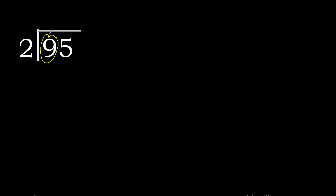95 divided by 2. 9 is not less than 2, therefore we proceed. 2 multiplied by 5 is 10 — excessive. 2 multiplied by 4 is 8; 8 is the closest. 9 minus 8 is 1.